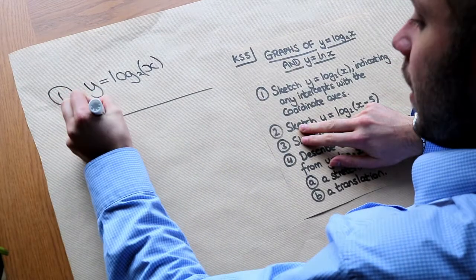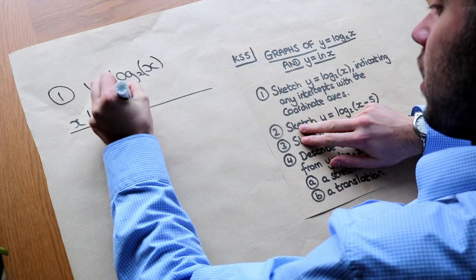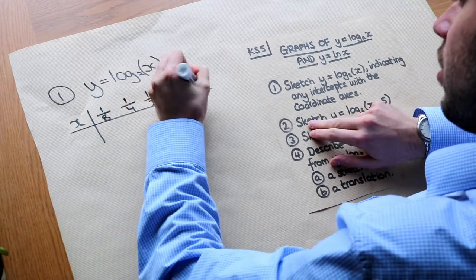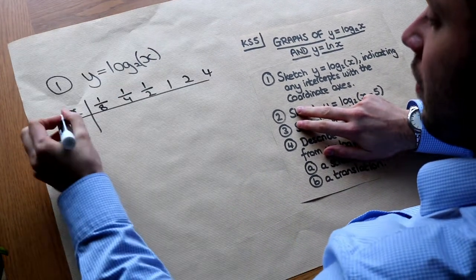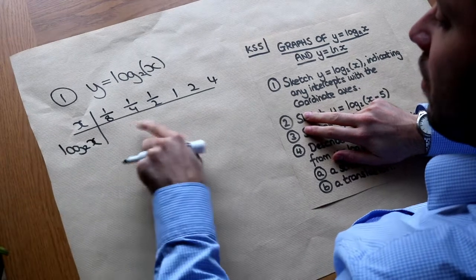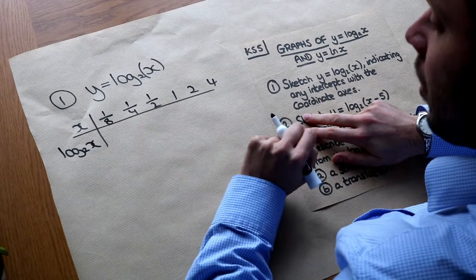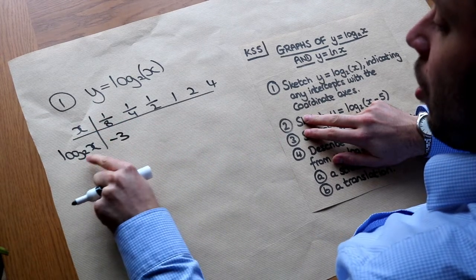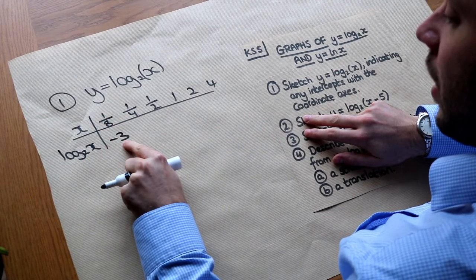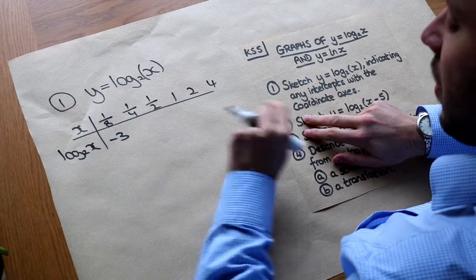So let's have say an eighth, a quarter, a half, 1, 2, 4, etc. And then let's consider log base 2 of each of these. So what is log base 2 of an eighth? Well if you do on your calculator it's going to be minus 3, and that's because 2 to the power of minus 3 is 1 over 2 cubed which is an eighth.